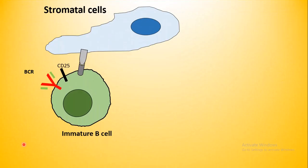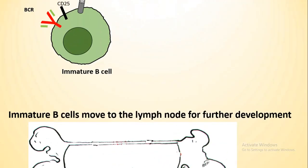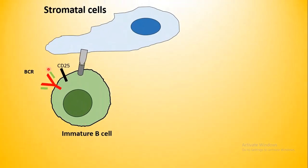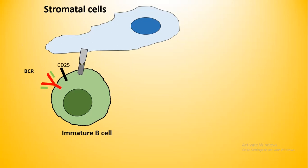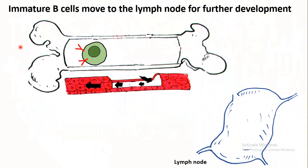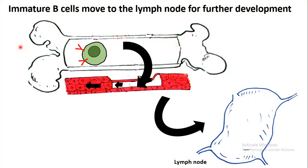The cell starts expressing CD25 and high-affinity IL-2 receptor, and it becomes an immature B-cell. In the immature B-cell, the light chain is now fully formed. Another remarkable thing is that the IL-7 receptor is down-regulated. In the absence of IL-7 receptor-mediated signaling, the adhesion molecules are also down-regulated. So these immature B-cells detach from the bone marrow stromal cell niche, come to the vascular niche, and migrate via blood vessels to ultimately reach the lymph node, which is a secondary lymphoid organ.